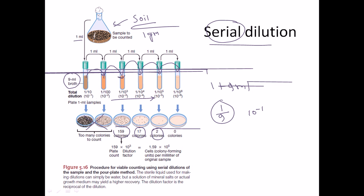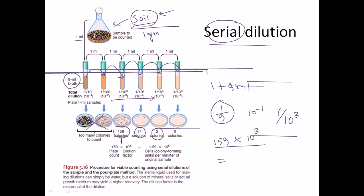Once you know the dilution factors — 10⁻¹, 10⁻², 10⁻³, 10⁻⁴, and so on — you can calculate the total number of microorganisms present in your original soil sample. For example, taking the 10⁻³ dilution with a plate count of 159 colonies: the plate count multiplied by the dilution factor (10³, since the concentration is 1 divided by 10³) gives 1.59 × 10⁵ cells per milliliter of original sample.